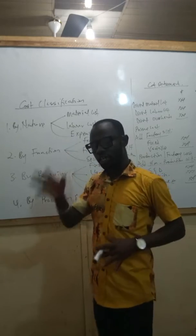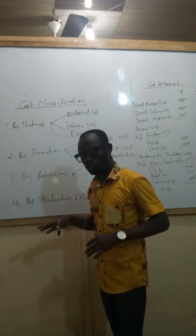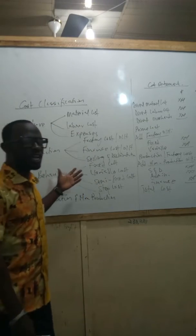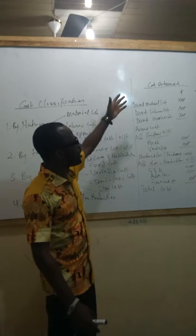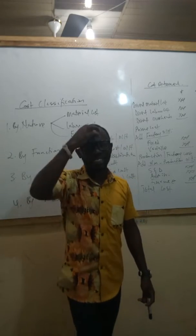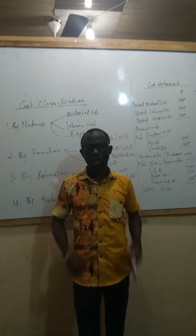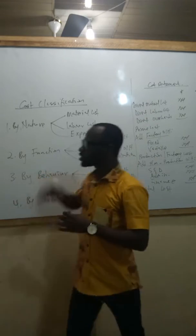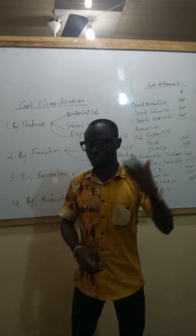I also touched on in the introduction about avoidable, unavoidable, controllable, and uncontrollable costs. Based on this classification, we are going to be required almost always to prepare some form of cost card or cost sheet. Even if the examiner doesn't ask us to prepare the cost sheet, he may ask us to prepare the profit statement - and whilst preparing the profit statement, the knowledge of cost classification will be coming on board and we need to utilize that knowledge.